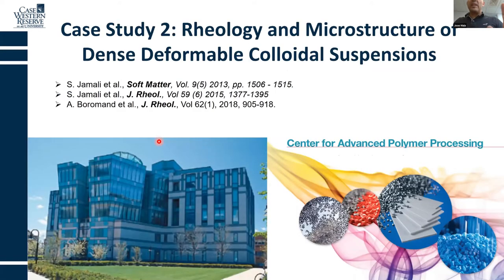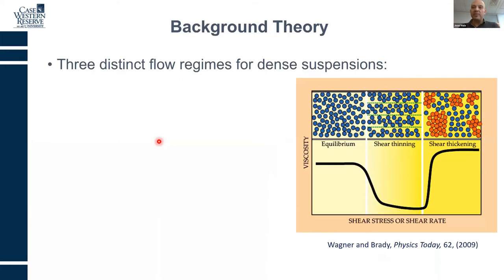The second case study is the rheology and microstructure of dense deformable colloidal suspensions. A classical picture from Wagner and Brady shows how the rheology of dense suspensions changes with shear stress. There are three main regimes: at low shear rates, Brownian motion dominates and viscosity is constant; at higher shear rates, particles align and form layers, decreasing viscosity; and at high shear rates, the viscosity increases and the system becomes shear thickening, either progressively — continuous shear thickening — or very quickly, ending in a shear jammed state.